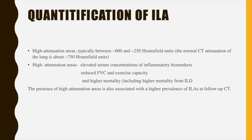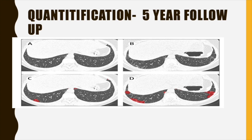Efforts have been made to quantify ILA, and high attenuation areas have been identified as a good marker of severity. A case example is given of a patient followed up at 5 years: the baseline CT showed subpleural non-fibrotic abnormalities without fibrosis, but at 5 years there was clear progression, and texture-driven data analysis showed that extensive fibrosis had increased from 1 to 5%. This type of quantification may be useful in future assessments.